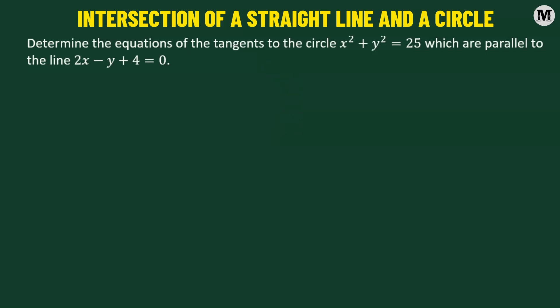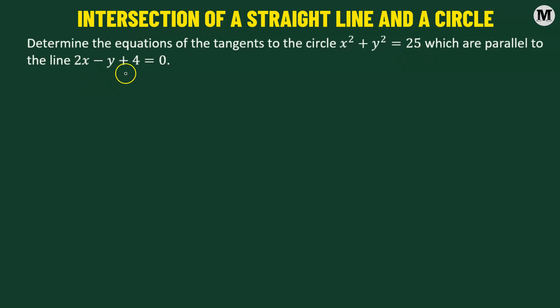Determine the equations of the tangents to the circle x squared plus y squared equals 25, which are parallel to the line 2x minus y plus 4 equals 0.